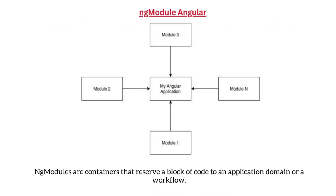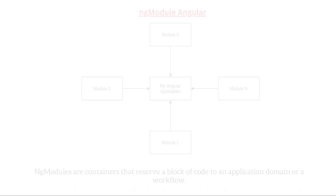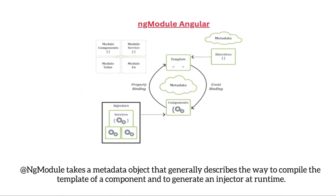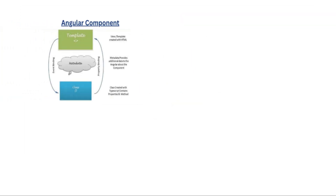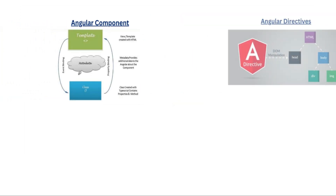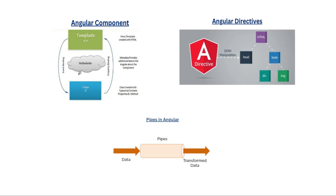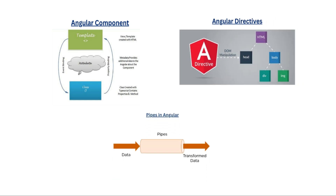NgModules are containers that reserve a block of code to an application domain or a workflow. The @NgModule decorator takes a metadata object that describes how to compile the template of a component and generate an injector at runtime. It also identifies the module's components, directives, and pipes, making some of them public through the export properties so that external components can use them.